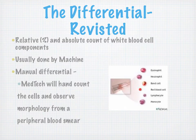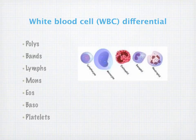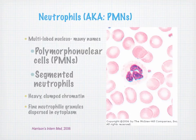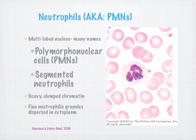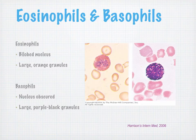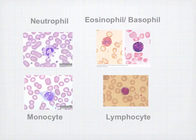The differential revisited: it's a relative percent and absolute count of white blood cell components, usually done by machine. A manual differential has the medical technologist hand-count and observe morphology from a peripheral blood smear. Neutrophils have a multi-lobe nucleus, also called PMN or SEG (segmented neutrophils), with fine neutrophilic granules dispersed in the cytoplasm and heavy clumped chromatin. The slide also shows eosinophils and basophils — you can see the visual difference between them — as well as monocytes and lymphocytes.